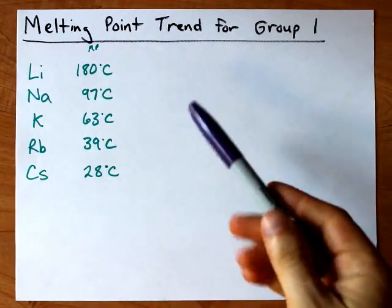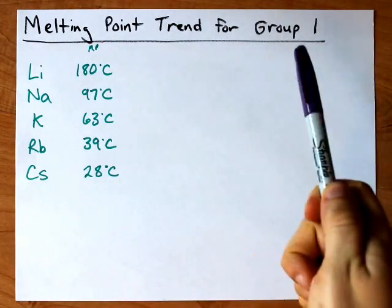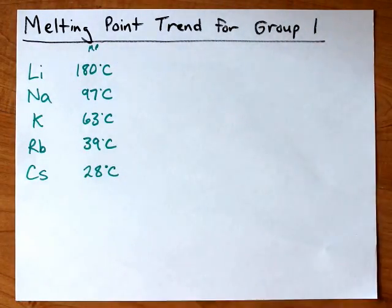Let's take a moment to discuss the melting point trend for group one, the alkali metals.